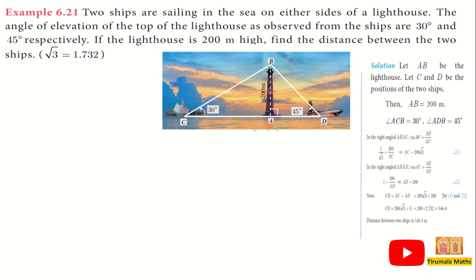One ship is on one side of the lighthouse. The angle of elevation of the top of the lighthouse observed from that ship is 30 degrees. The other ship observes an angle of elevation of 45 degrees. The height of the lighthouse is 200 meters.